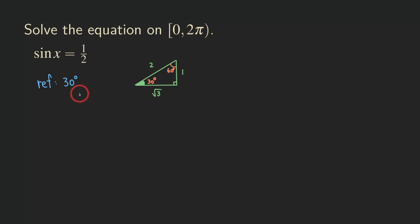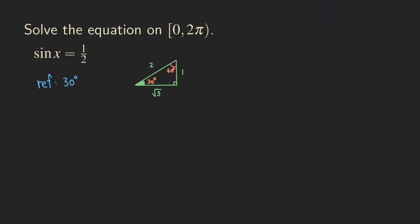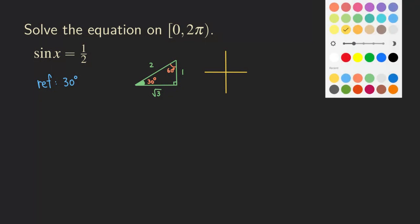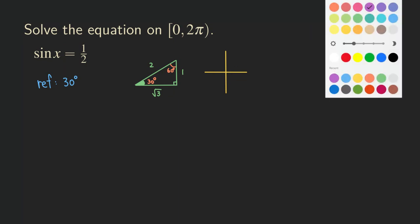We also need to consider which quadrant we're in, since we're solving on the interval 0 to 2π, covering all four quadrants. We need to know where sine is positive. We use the mnemonic 'All Students Take Calculus' to determine which trig functions are positive in each quadrant.